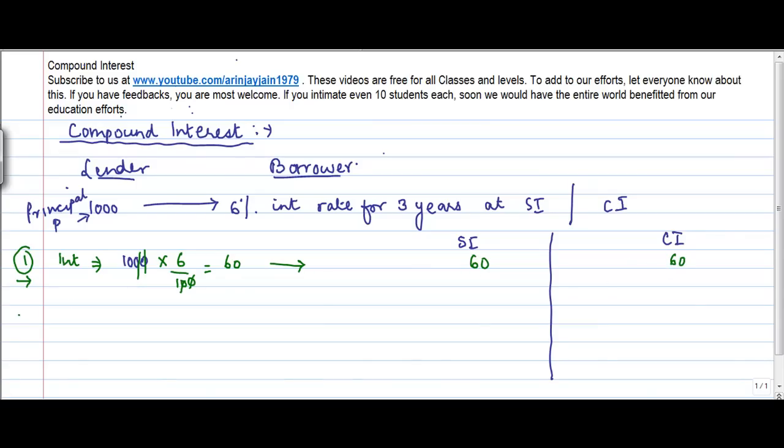What happens is that when you move on to year two and you calculate your interest, in case of simple interest, this amount the principal, the principal amount on which the interest is calculated, remains as 1000 if the sum is borrowed on simple interest.